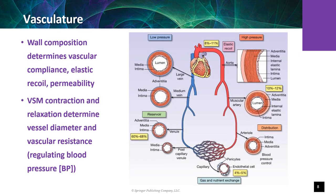Blood flow in the systemic circulation is driven by the pumping action of the left ventricle. Pressure is highest in the aorta and falls throughout the circuit. Arteries have much thicker walls compared to veins and are able to withstand greater pressure. Arteries branch into arterioles, which represent the primary site of 70 to 80% of systemic vascular resistance. The ideal site for exchange between blood and tissues are capillaries, which have uniquely thin walls composed only of endothelial cells and a basement membrane.